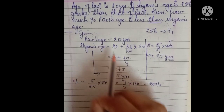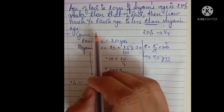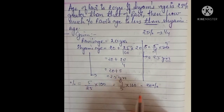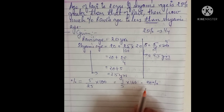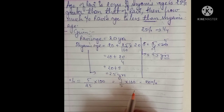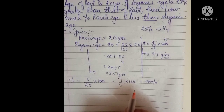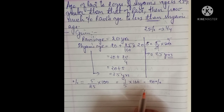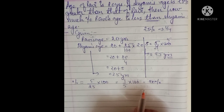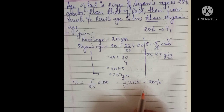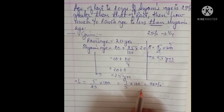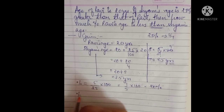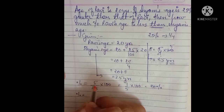So the answer is 20% less. This does not mean that because Shyam is 25% more, Ravi is also 25% less — that is a common mistake. Many times without practice, people directly write 25% more so 25% less — that is not correct. In this case, the answer is 20%.